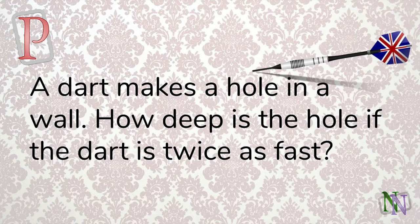We start with the puzzle. When a dart is thrown at a wall it makes a hole. But what is the hole like if the dart is twice as fast? The solution will be given near the end of the video.